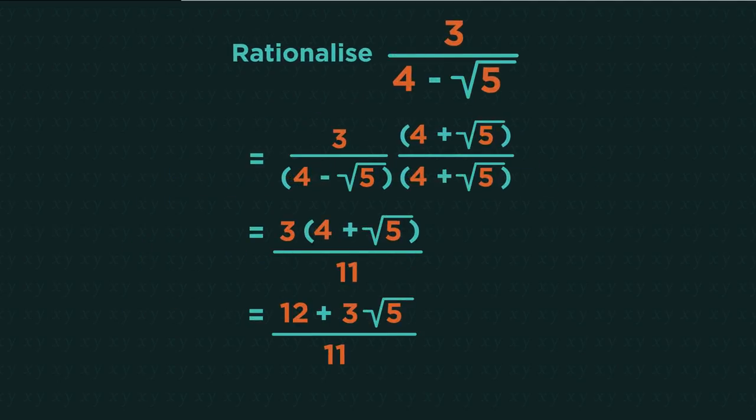So going back to the question, we can simplify by expanding brackets and we get this: 12 plus 3 root 5 over 11.